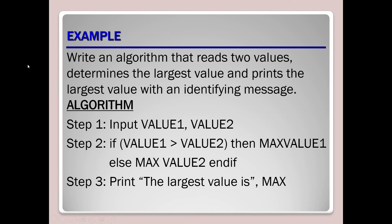Now we will see another example. Write an algorithm that reads two values, determines the largest value, and prints it with an identifying message. In step one, we read value one and value two from the user. In step two, we compare: if value one is greater than value two, then value one is saved in the variable 'max'; otherwise value two is saved in 'max'. In step three, we display the largest value — whatever is stored in 'max' is the largest.